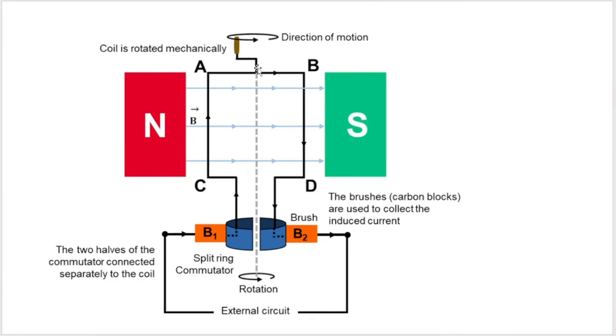Here we have a DC generator. Again, it's a generator because they're showing how I'm mechanically rotating the coil. And I know it's DC because of the split rings.